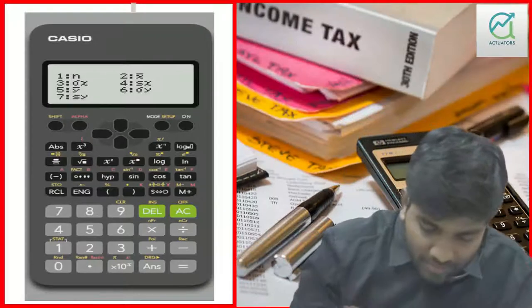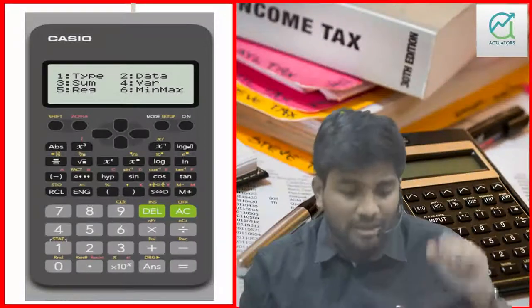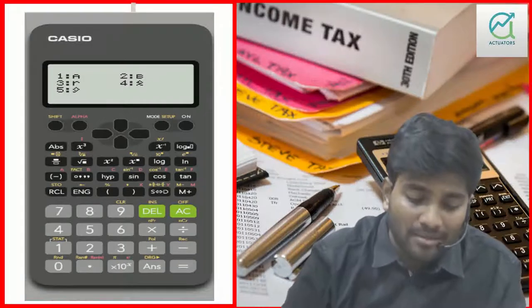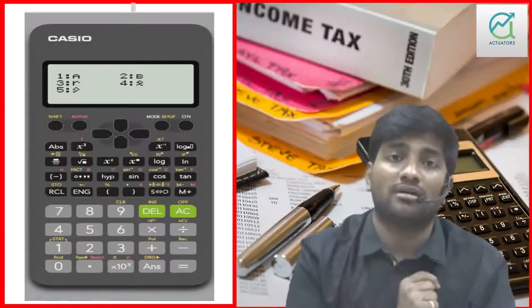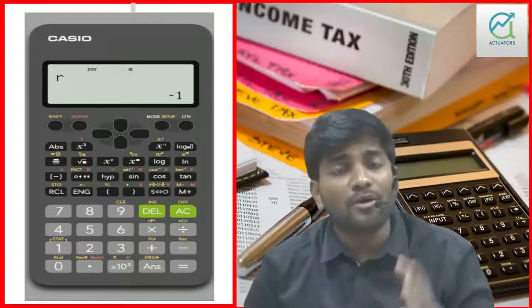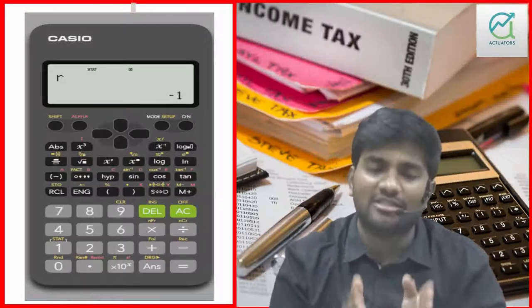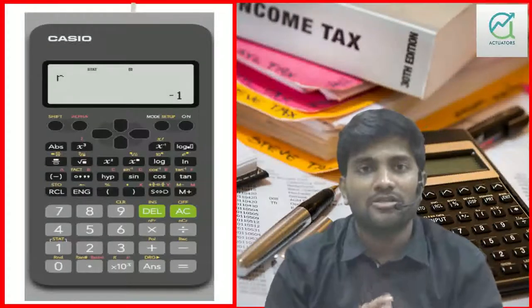One more thing — under Shift-1, option 5 gives regression results. Press 5 and then 3 to get R, the correlation coefficient. The answer is minus 1. Why? Because this is a perfectly negative correlation — as X increases from 1 to 5, Y decreases from 50 to 10. So R equals minus 1. This is all about stat mode that you use in CS1 and CS2. Thank you.